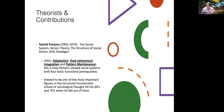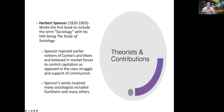Talcott Parsons wrote grand theory and was once a major voice in functionalism, though less referenced now. He wrote The Social System and created the AGIL paradigm: adaptive, goal attainment, integration, and pattern maintenance — looking at how we engage with the social structure of life. Herbert Spencer wrote the first book using the word sociology. He rejected earlier notions of Comte and Marx and believed in market forces and capitalism as opposed to class struggle in support of communism. Spencer's works inspired many sociologists and contributed greatly to our field.